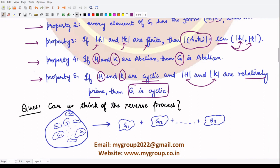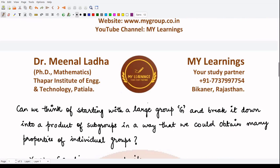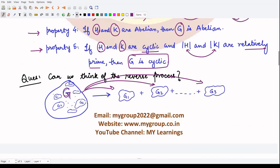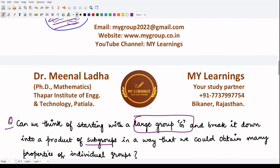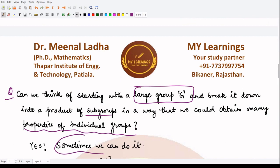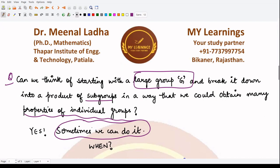So can we think of the reverse process? If you have some bigger group G, can you divide it into different subgroups? Can you break it down into different groups? The question is: can we start with a large group G and break it down into a product of subgroups in such a way that we can obtain the properties of the individual groups from those of G? The answer is yes — sometimes we can do that. The condition for when we can do this is what we look at next.